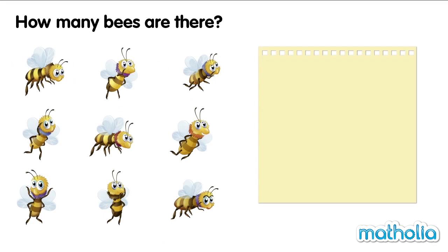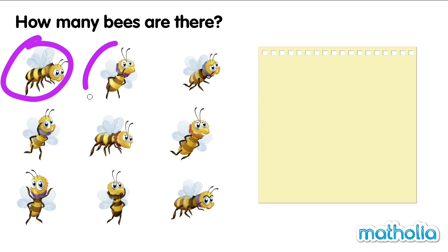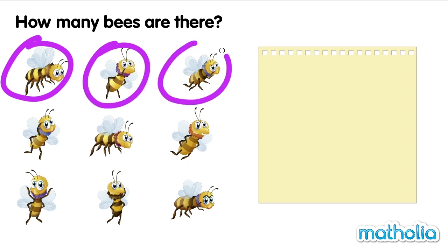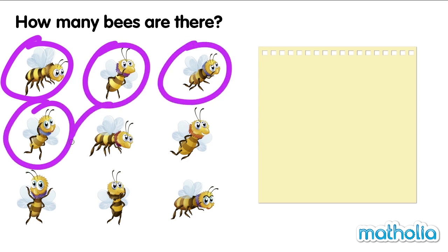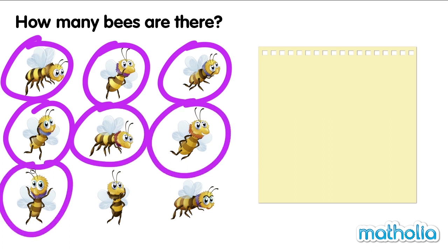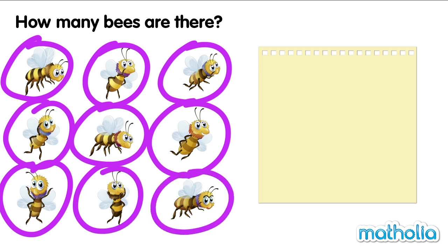How many bees are there? One. Two. Three. Four. Five. Six. Seven. Eight. Nine. There are nine bees. Nine.